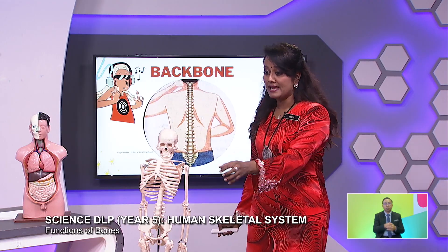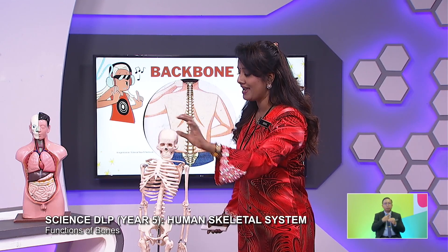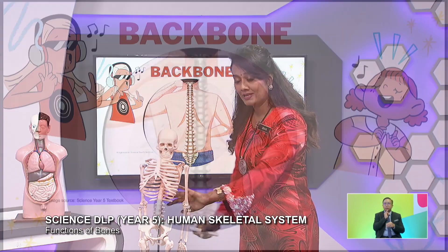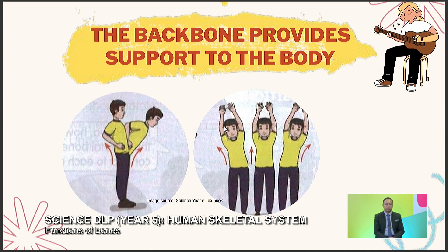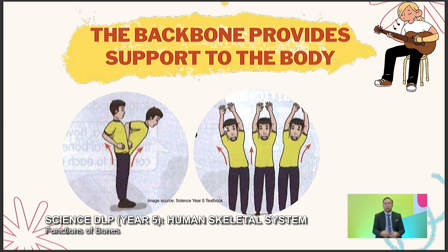This is the skull. Next is the back bone. This is the back bone — can you see it? It's slightly bent, right? Exactly. Our back bone provides support to our body. That's why we can stand here and we can move, slide, front and back — everything because of the back bone. So it really helps support our body.